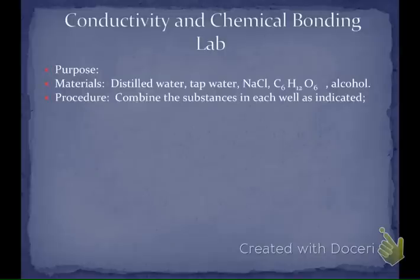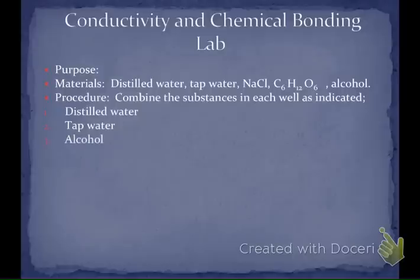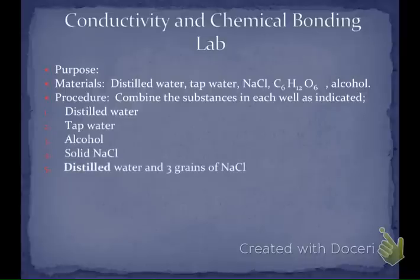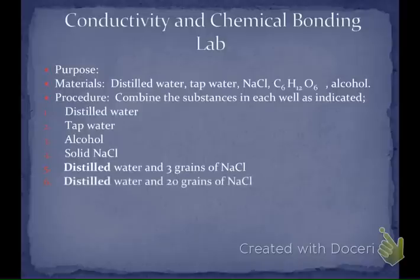Here are the materials for tomorrow's lab: distilled water, tap water, sodium chloride, sugar, and alcohol. We're going to combine those substances in each one of the little wells as indicated. Well one: distilled water. Well two: tap water. Well three: alcohol. Well four: solid salt. Well five: distilled water and just three grains — count out three little crystals of salt and put them in there. Well six: distilled water and 20 grains of salt.